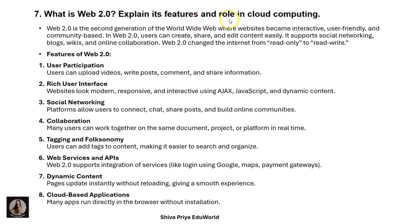The next question is: what is Web 2.0? Explain its features and role in cloud computing. Web 2.0 is the second generation of the World Wide Web where websites become interactive, user-friendly, and community-based. Users can create, share, and edit content easily. It supports social networking, blogs, wikis, and online collaboration. Web 2.0 changed the internet from read-only to read-write.